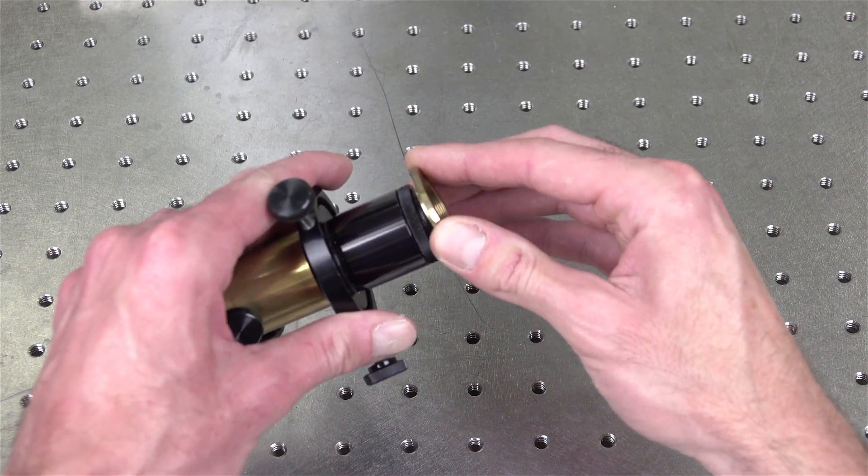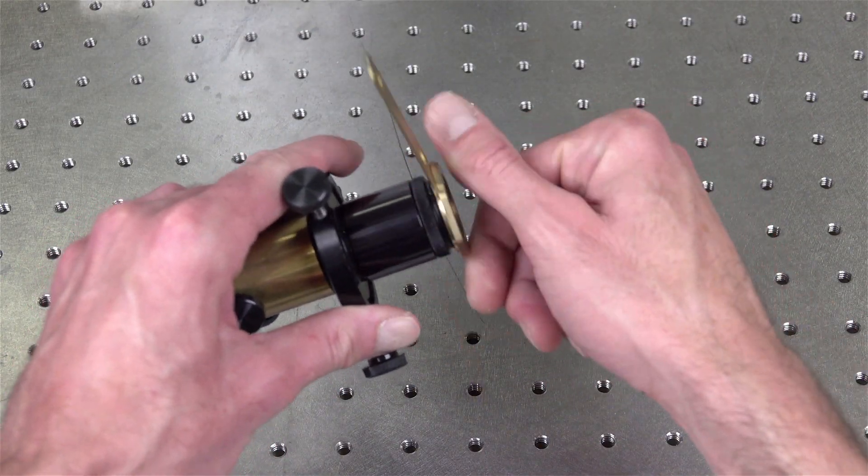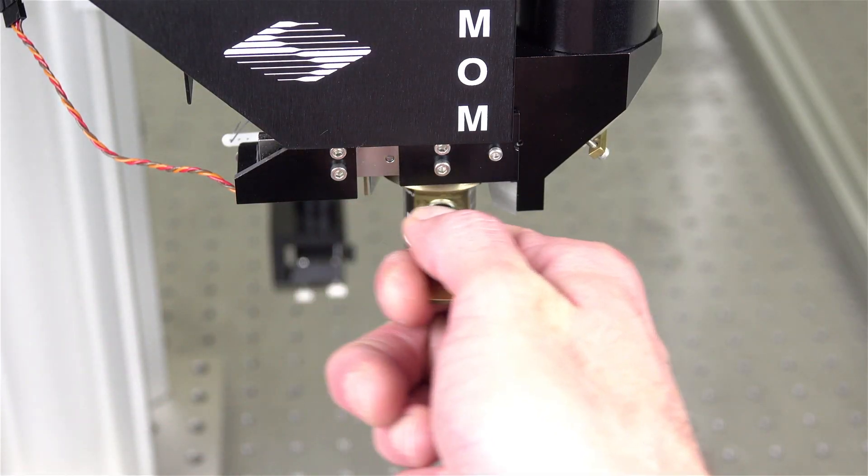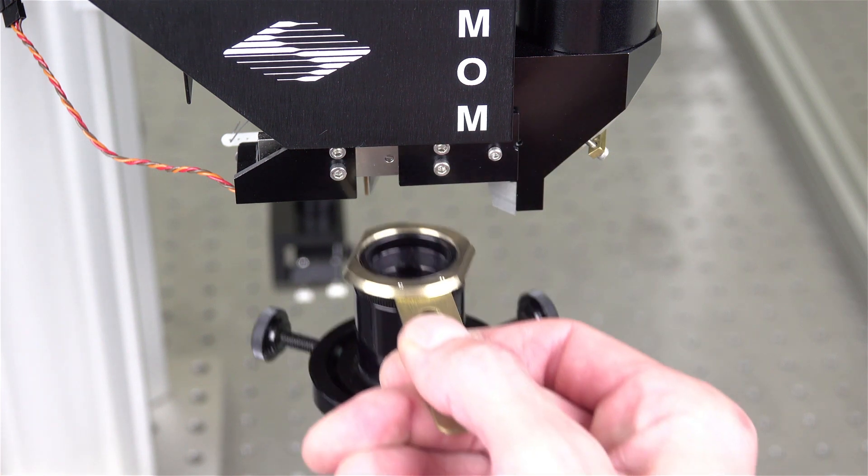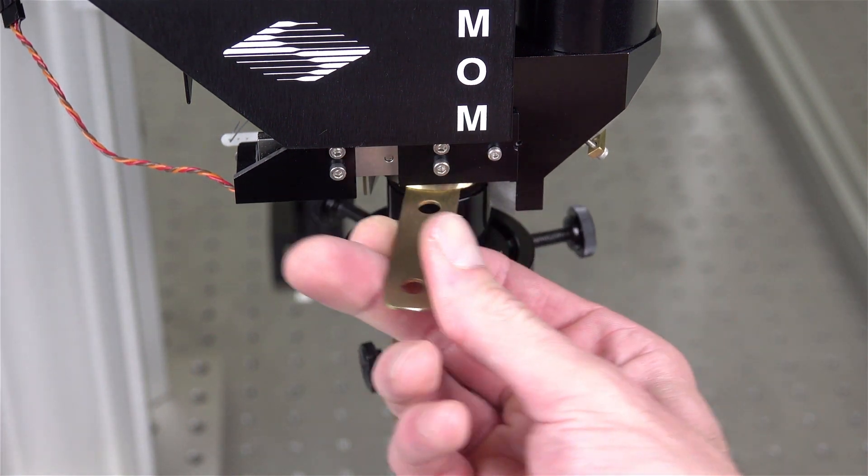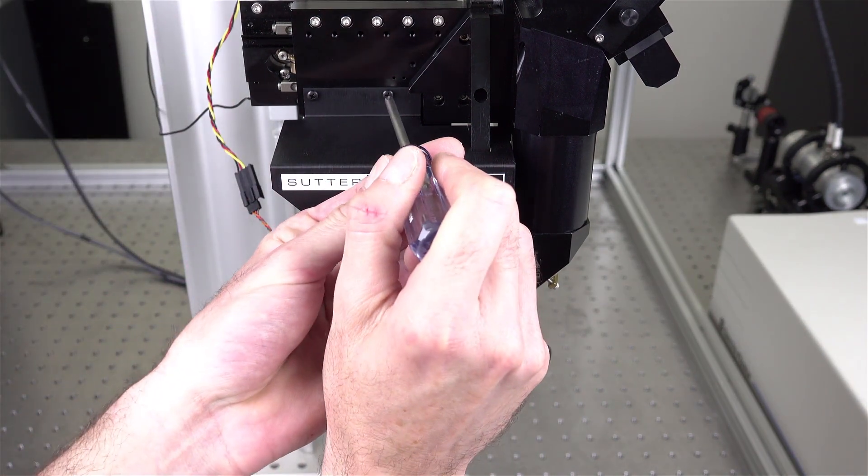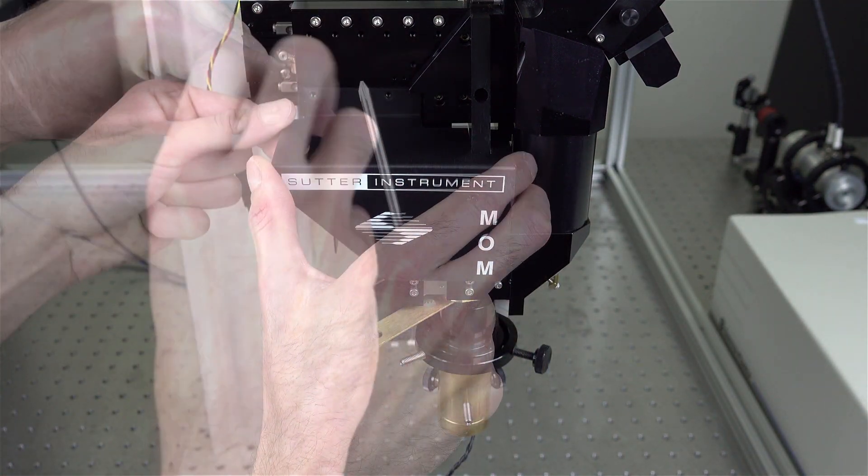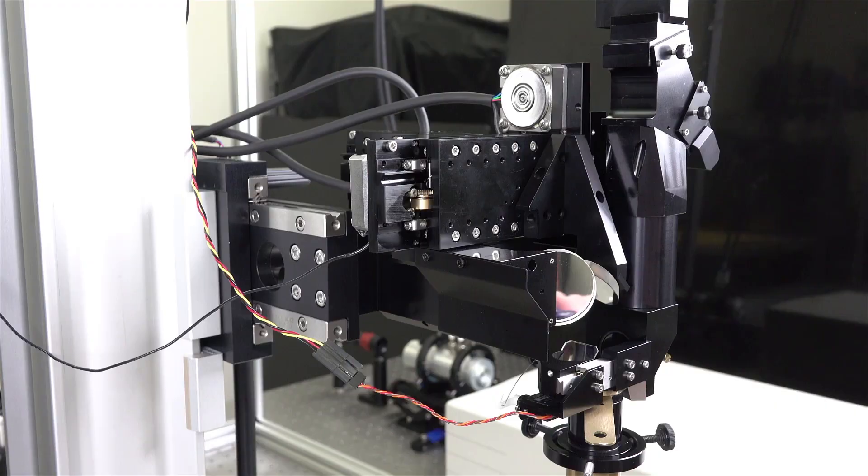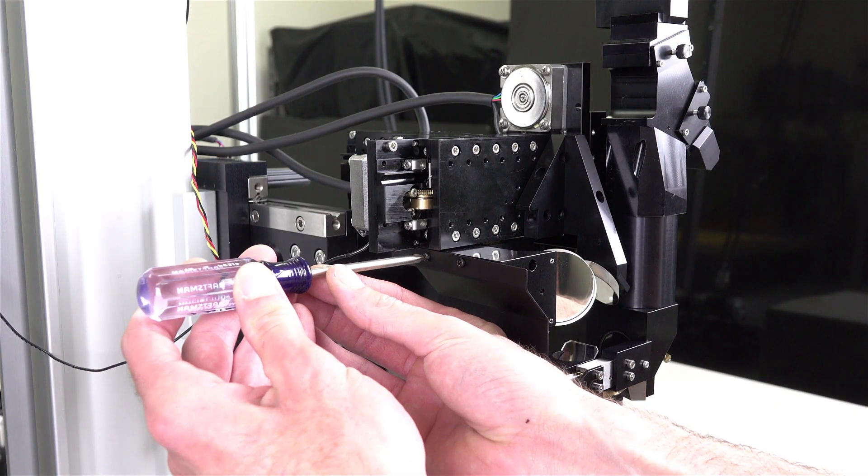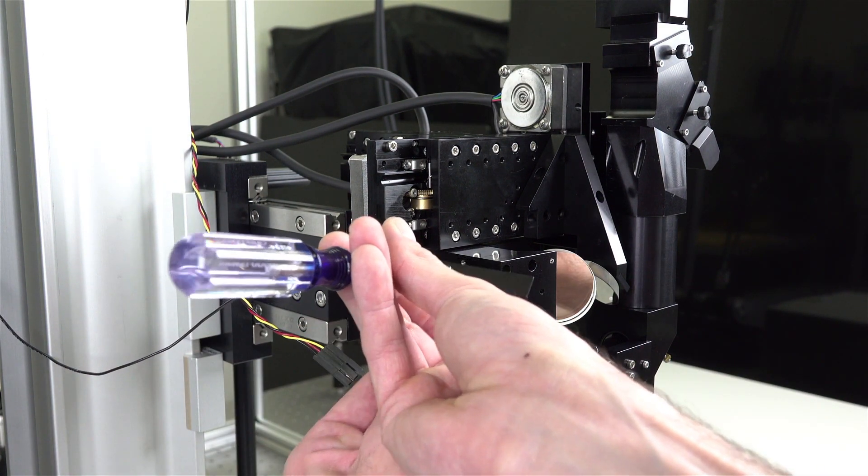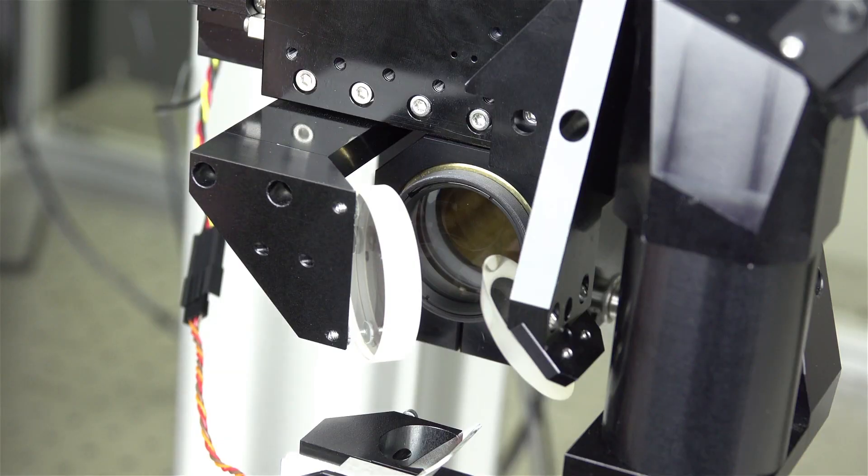Step 1: Assemble the alignment tool with the objective holder so it can replace the objective in your system. Step 2: Remove the front cover of the MOM,